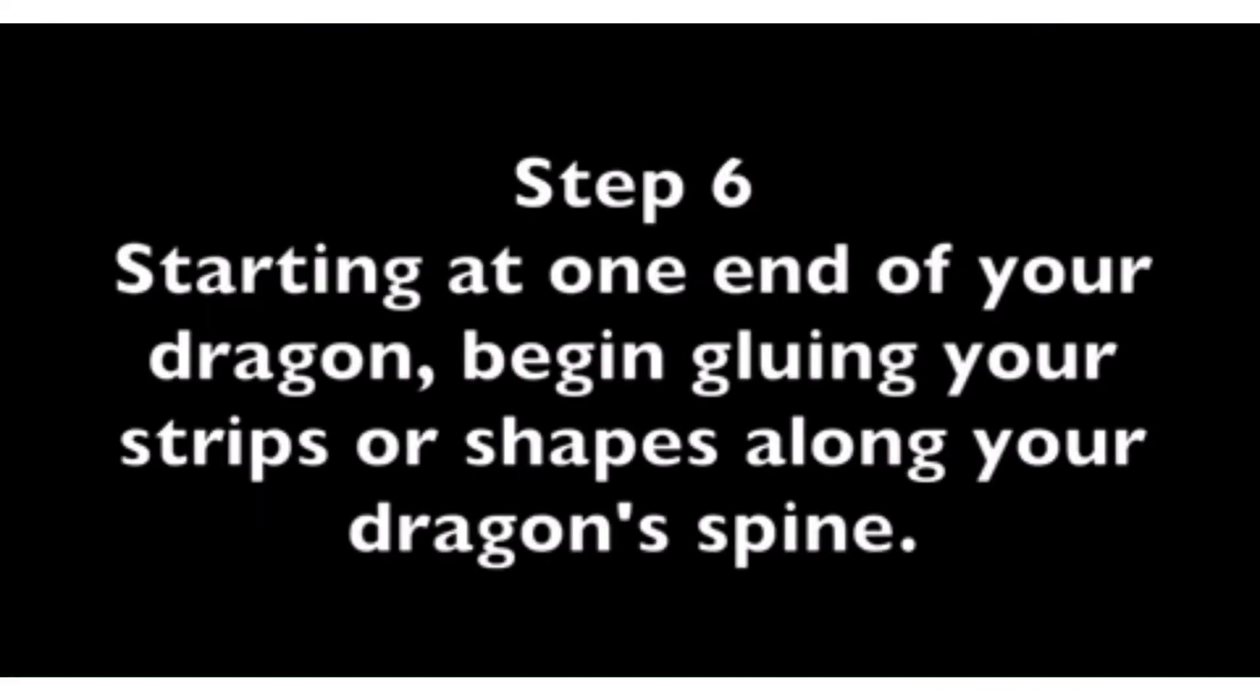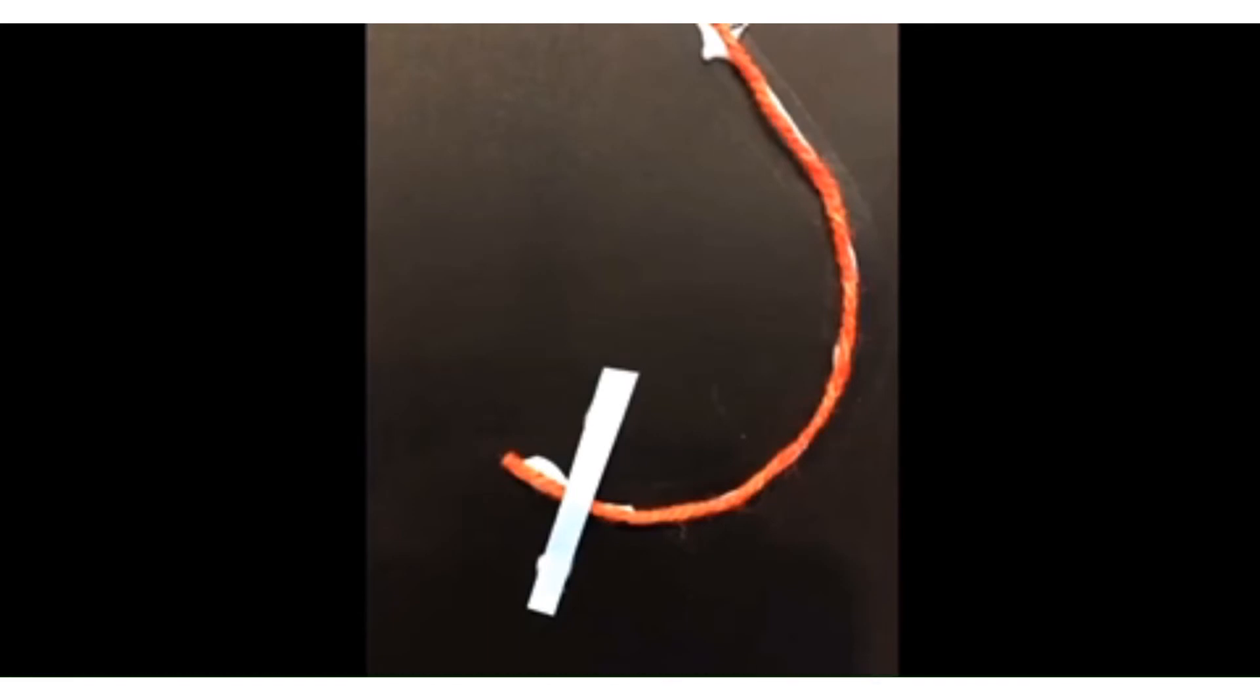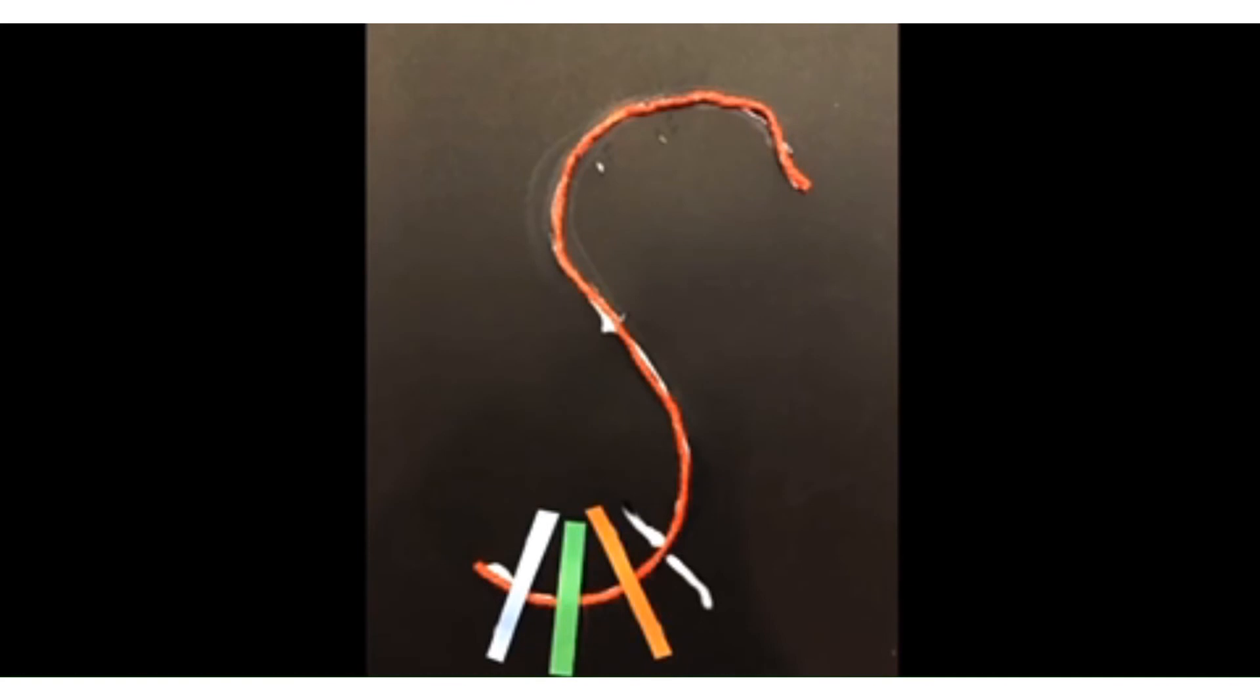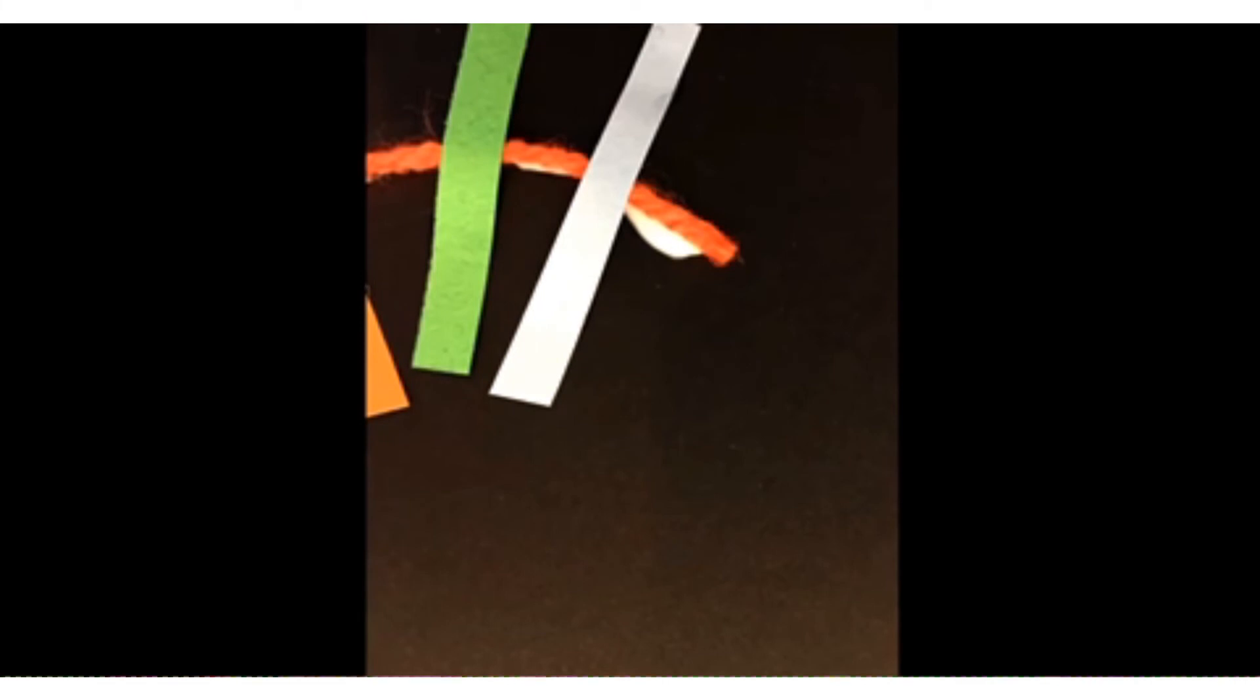Step 6. Starting at one end of your dragon, begin gluing your strips or shapes along your dragon's spine until you have filled up the dragon's entire body. Remember to only use a small amount of glue. Don't worry if you can see it sticking out from behind your pieces. It will dry clear. Leave a small section of yarn at both ends of your dragon because you're going to be sticking on a head and a tail.